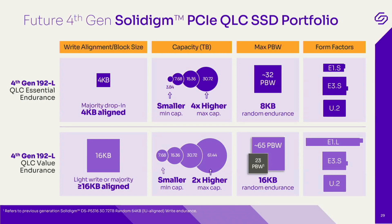In terms of capacity, there are four capacity points for both drives. Essential Endurance starts at 3.84 TB and goes up to 30.72 TB. Value Endurance starts from 7.68 TB and goes all the way up to 61.44 terabyte — we now have 61 terabytes in a single drive. In terms of maximum PBW — petabytes written — Essential Endurance allows you to write up to 32 petabytes in a single drive with IU-aligned random writes, and Value Endurance allows up to 65 petabytes with IU-aligned writes.